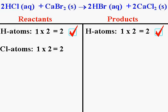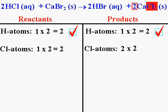On the product side, the Cl atoms are contained in the molecule CaCl2. There's a subscript of two after chlorine, meaning there are two chlorine atoms in every molecule of CaCl2. There's also a two in front of the molecule CaCl2, meaning I have two of those molecules. I take the number of chlorine atoms in a molecule, two, and multiply by the number of molecules, two — giving four chlorine atoms on the product side. That doesn't match the reactant side, which has only two chlorine atoms. The chlorine atoms do not balance.